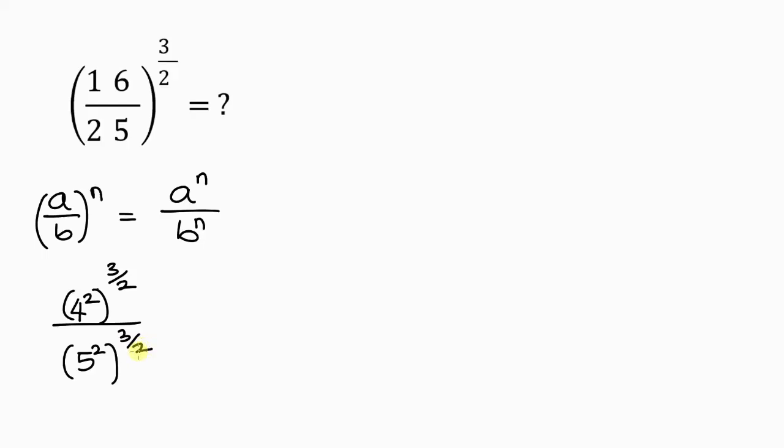Now we're going to be using another law of indices. When I have a to the power of m and this is raised to the power of n, the law of indices says this a can be written the same way, but we have to multiply the powers like m times n, so that we have a to the power of m times n, which is mn.